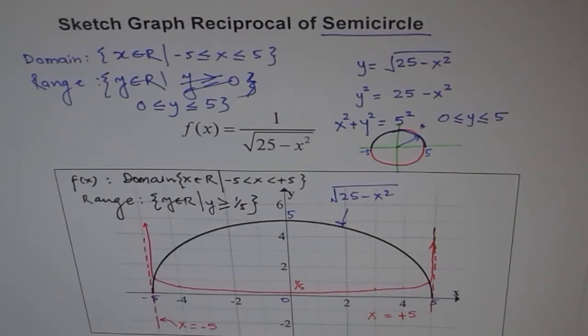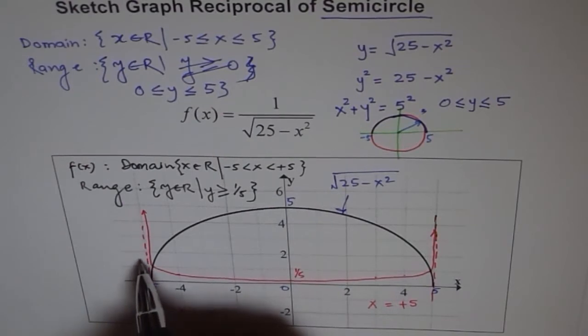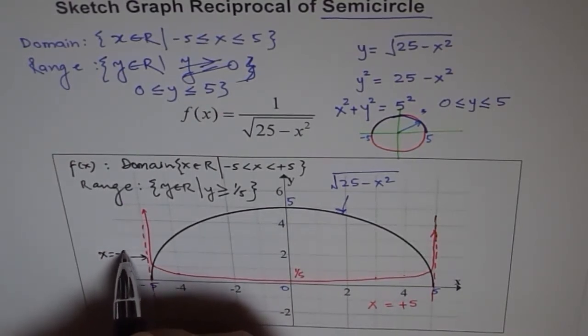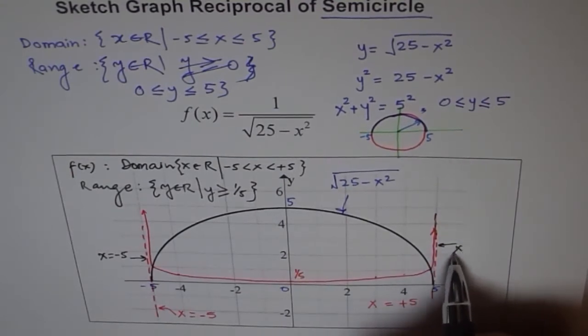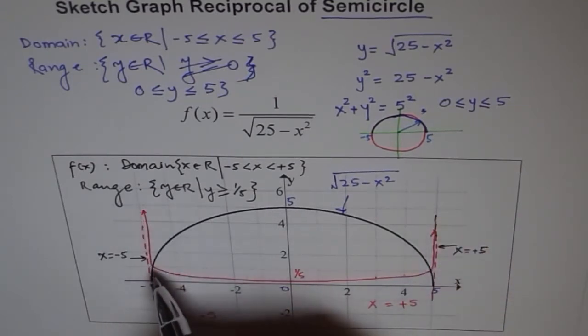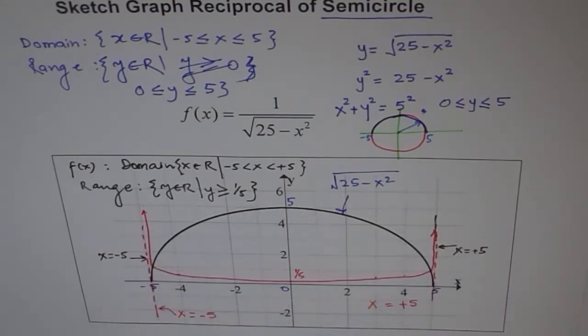I hope you understand it. Have a close look at this graph. So this is my line, where vertical asymptote is x equals to minus 5. And here, the vertical asymptote is x equals to plus 5. And it's like a bell-shaped, flat, very flat U-shaped graph. Now, have a good look at it. Try to understand reciprocal of a semicircle.